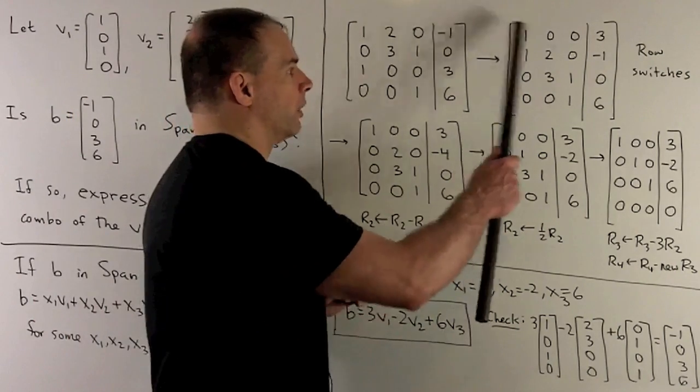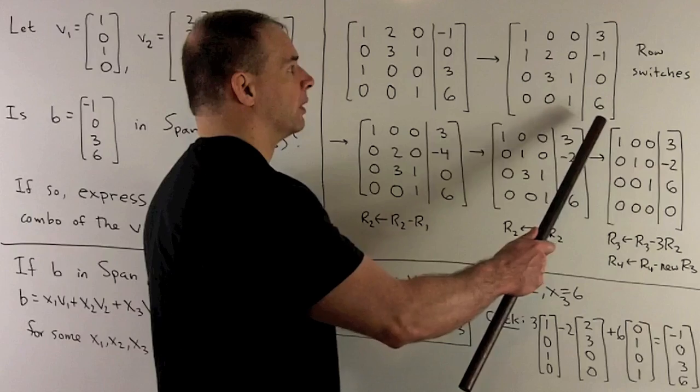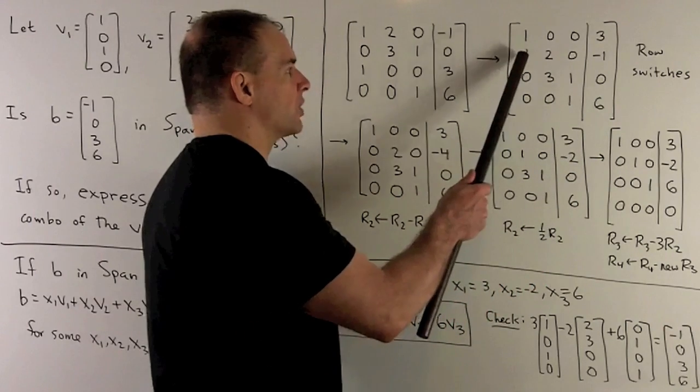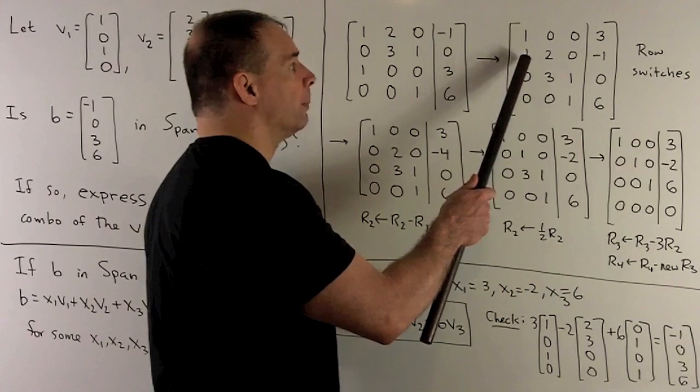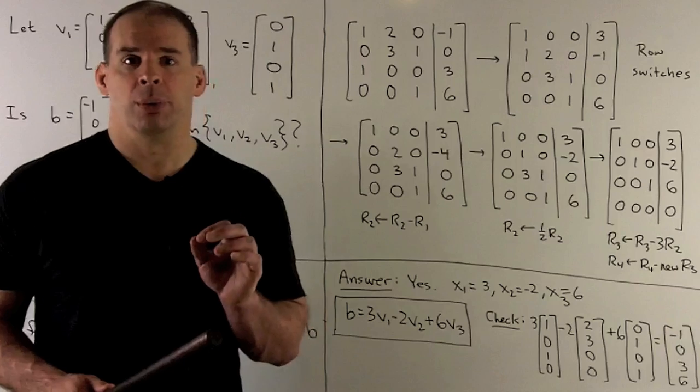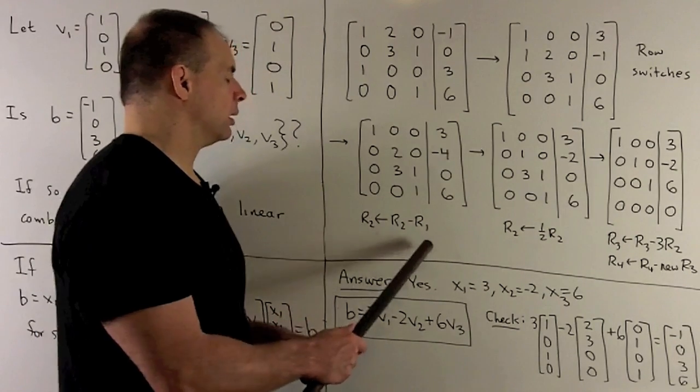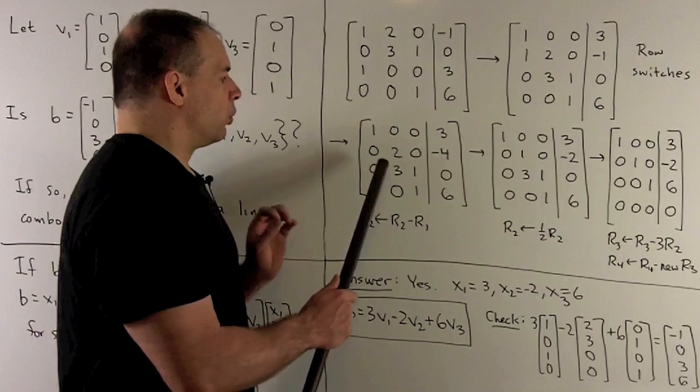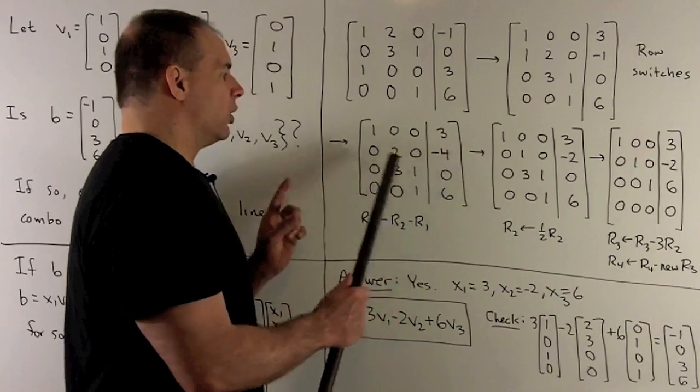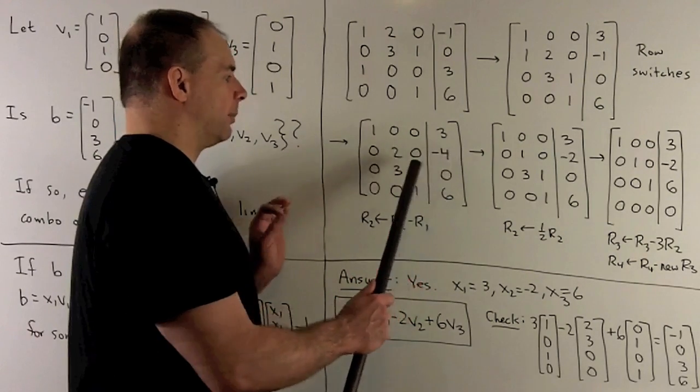So this is just going with a bunch of row switches. Now, first step, I want to get rid of this 1 here. I want to turn it into a zero. So I'm going to replace row 2 with row 2 minus row 1. When we do that, we'll have this new row, and then we can divide by 2. So that'll be the next step.